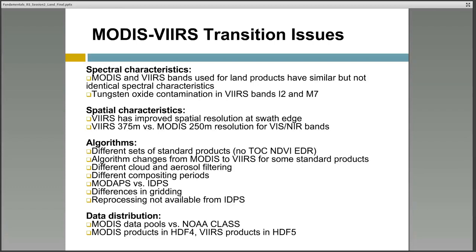Some of the standard products for VIIRS are different than MODIS. For example, there is no top-of-canopy NDVI environmental data record. There are also differences in the algorithms used for cloud and aerosol filtering, in the way the raw data are processed, and in data distribution.